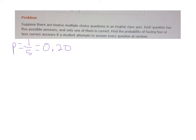So that's going to be our p-value for the binomial distribution here. Now the question says find the probability of having four or less correct answers if you're just choosing them at random.